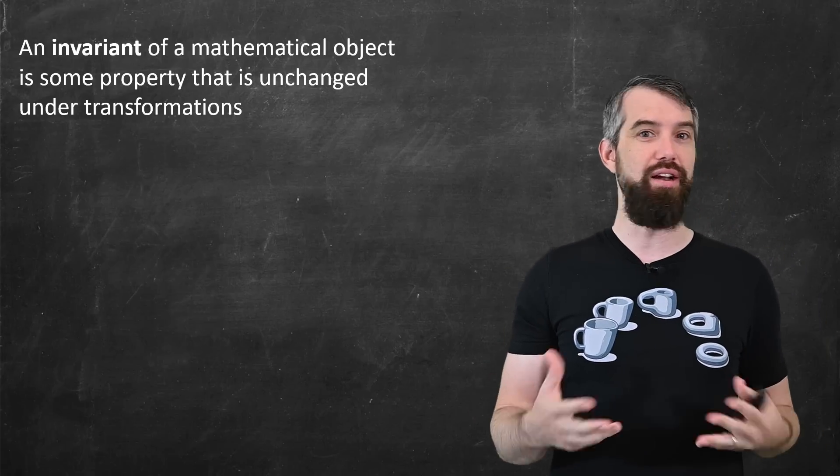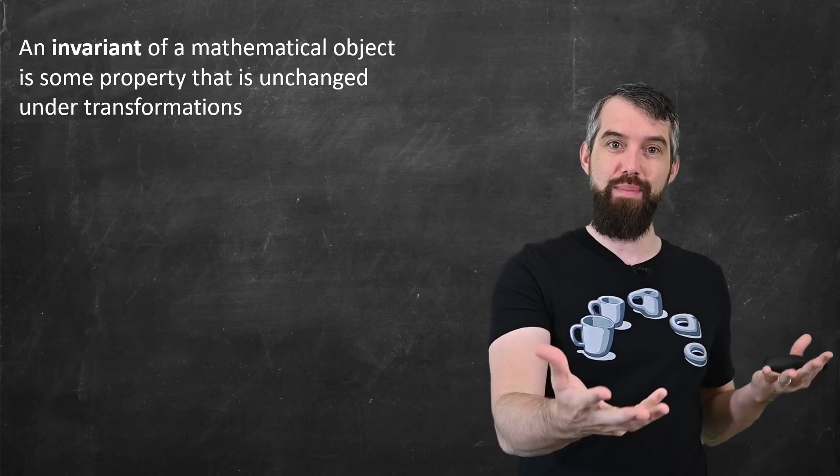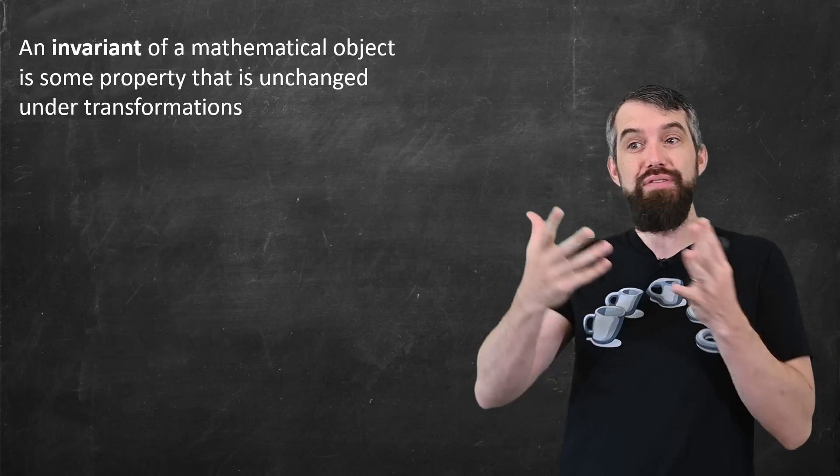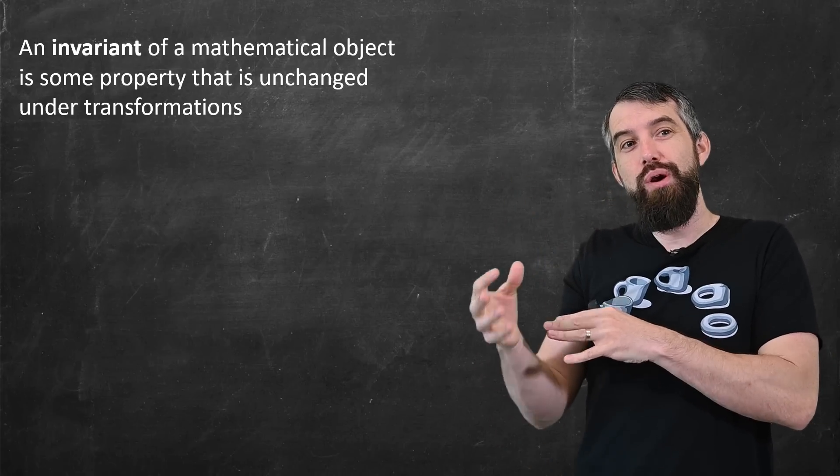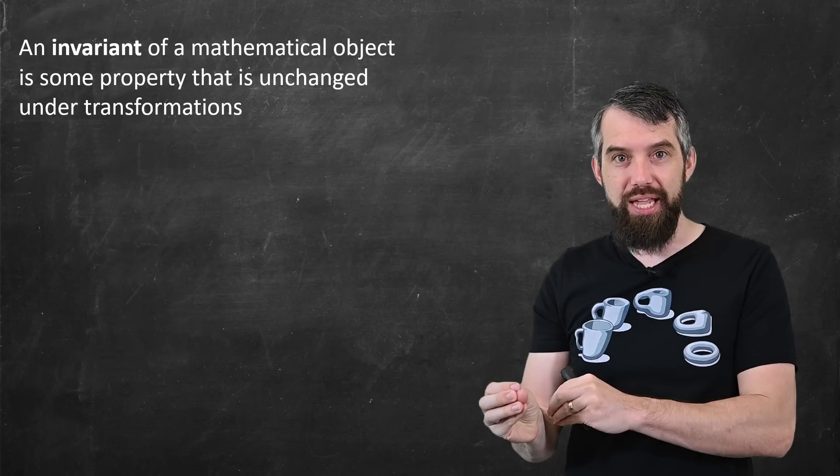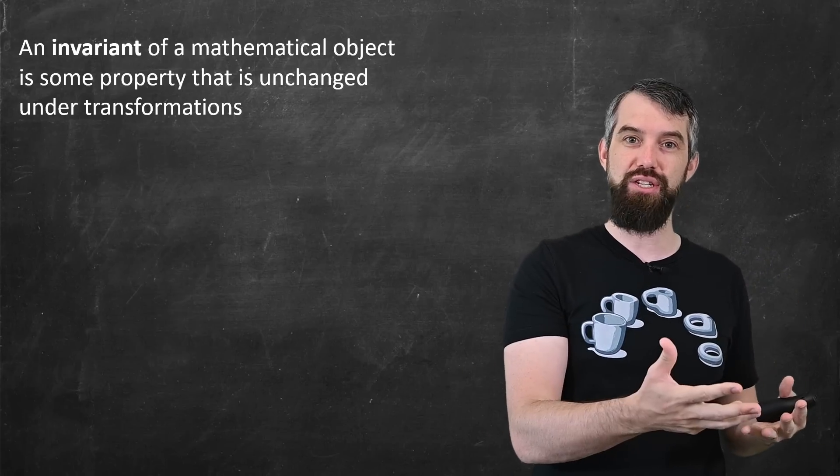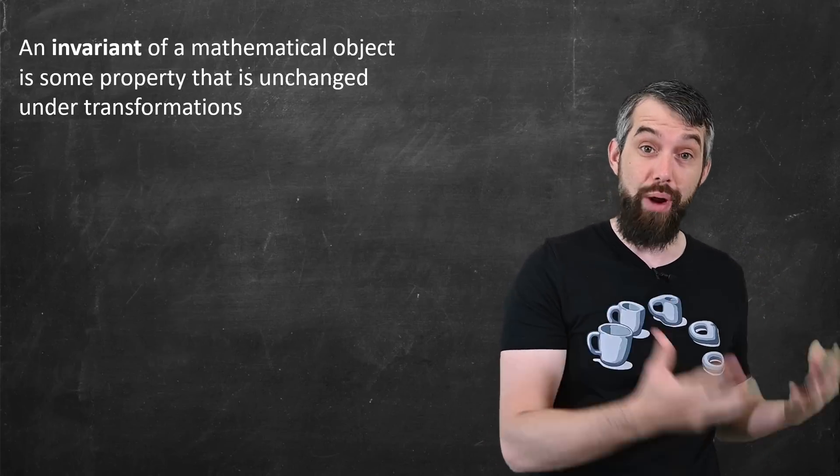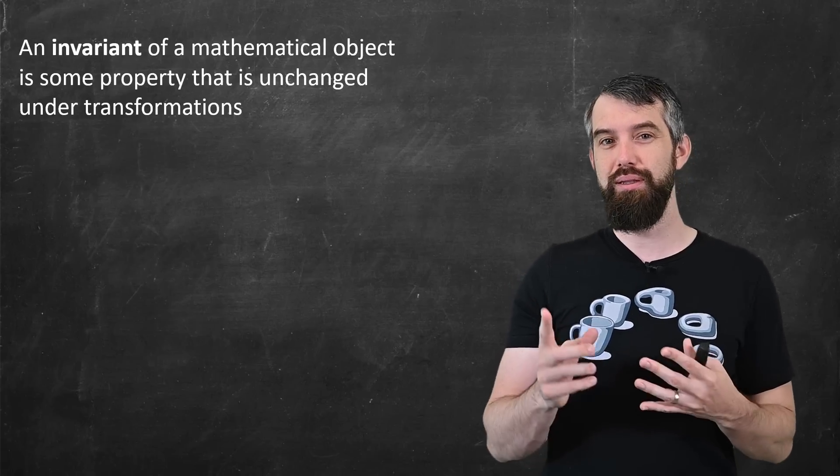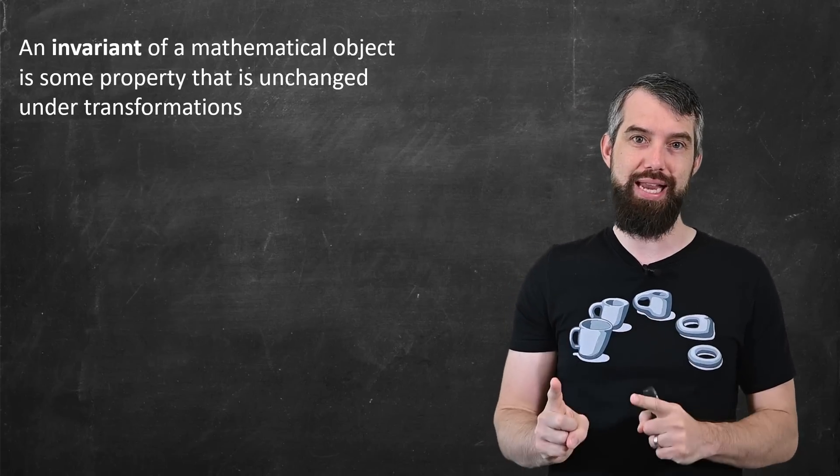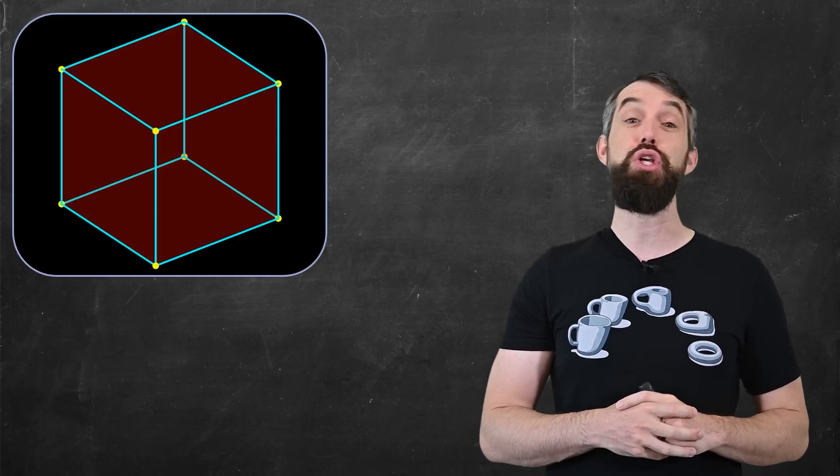In that graph theory example, we saw how mathematical objects of graphs were associated with this specific number, the chromatic number. But broadly speaking, an invariant is just when you have a mathematical object or a class of mathematical objects, and you have some property where that property doesn't change when you make various transformations. In the context of graphs, the transformations we were considering were graph isomorphisms. But let me show you a new example and a new invariant in a new context. Now we're going to go to geometry.